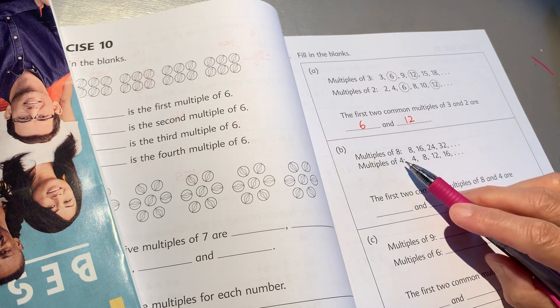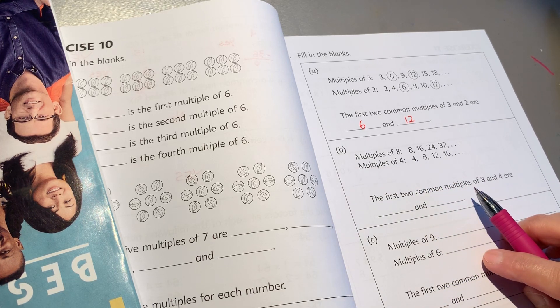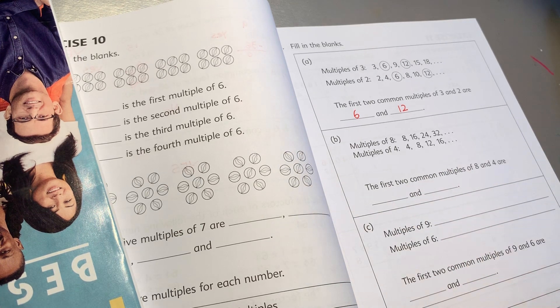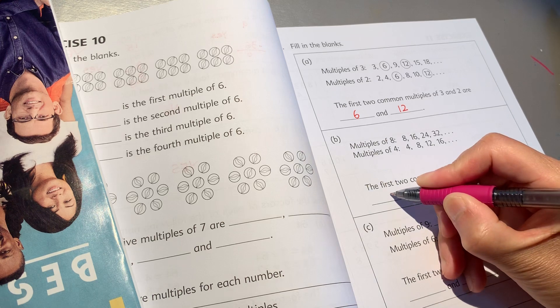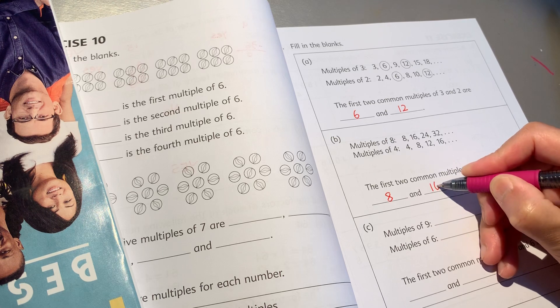Multiples of 8, the first two common multiples of 8 and 4 are 8. 2 times 8 is 16.